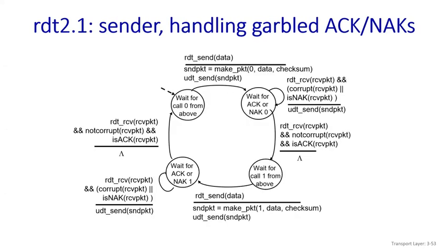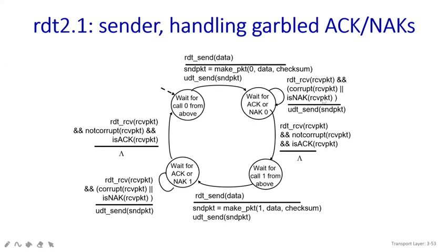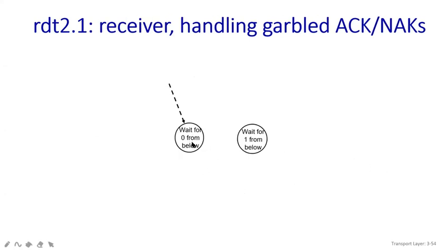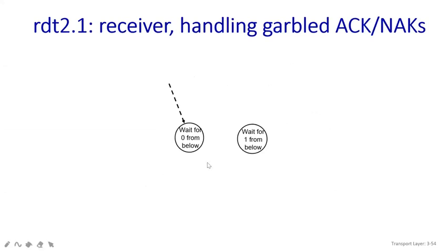This is all about how RDT 2.1 works on the sender side. Now let's see what is happening on the receiver side. You can see 'wait for call 0 from below'. We sent it as 'call 0 from above' on the sender side, so from the receiver side this corresponds to 'call 0 from below'. The receiver side waits for the packet from the below stage.